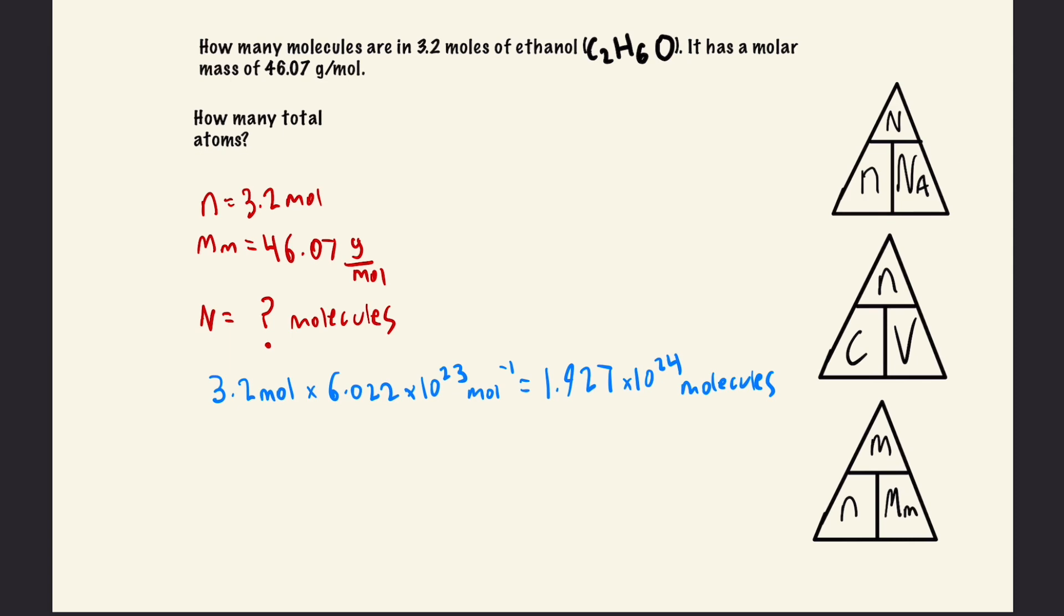So moles times Avogadro's number, 3.2 × 6.022×10²³, gives us the number of molecules. Our answer is 1.927×10²⁴ molecules.